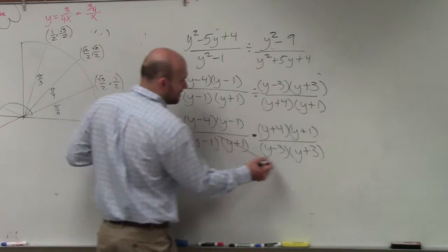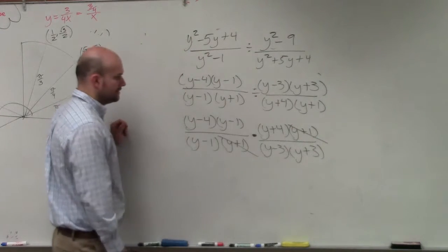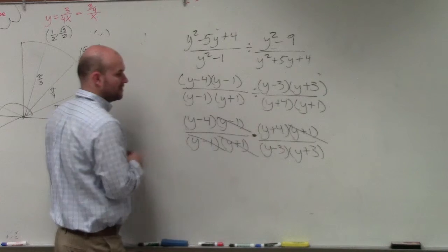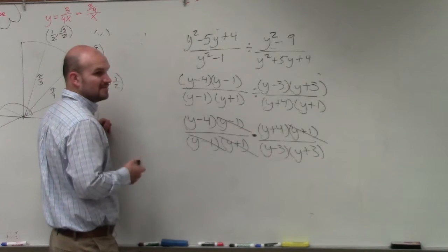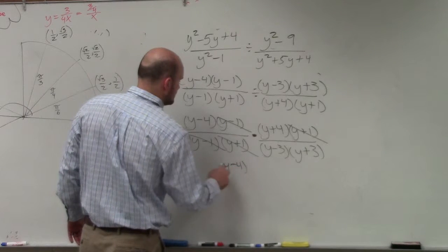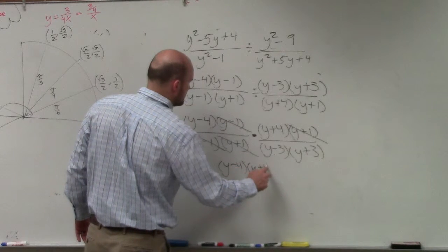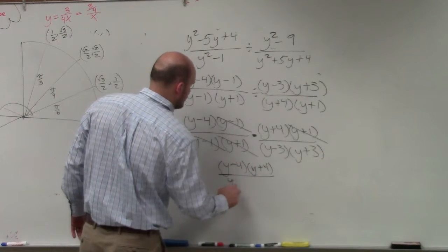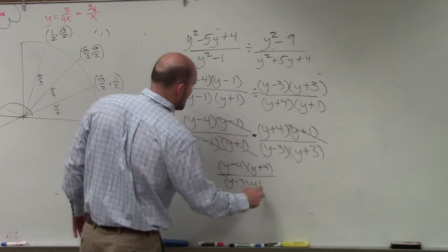Well, it looks like I have a (y+1) and a (y+1), and a (y-1) and a (y-1). That looks about it, right? So I can go to (y-4) times (y+4) all over (y-3) times (y+3).